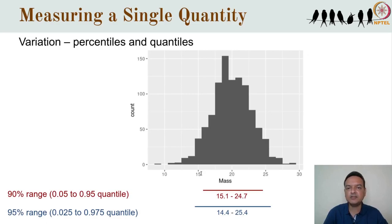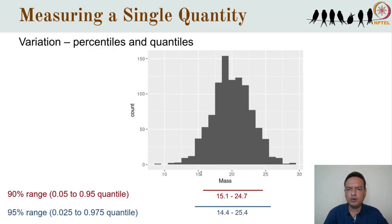Armed with this understanding of quantiles, we can choose to represent the variation in our population in any number of ways. For example, here is a distribution of 1000 body masses — we might want to know the points between which 90% of the values lie, that is the 0.05 and 0.95 quantiles. Here we see that 90% of the body masses lie between 15.1 and 24.7 grams. Or the central 95% — the 0.025 and 0.975 quantiles — lie between 14.4 and 25.4 grams. If you are not familiar with quantiles, please do watch this section multiple times until it makes sense to you.